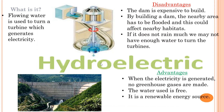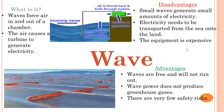A hydroelectric power plant uses flowing water to turn a turbine which generates electricity. Advantages: no greenhouse gases are produced, and water is a free, renewable energy source. Disadvantages: the dam is expensive to build, building a dam floods the nearby area affecting nearby habitats, and if it does not rain enough, there may not be sufficient water to turn the turbine.